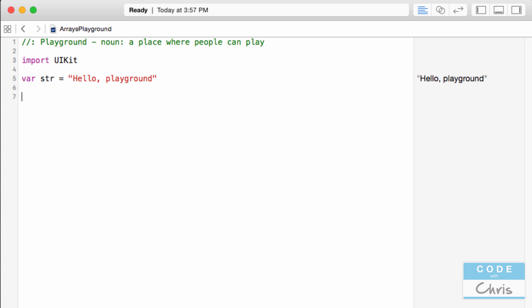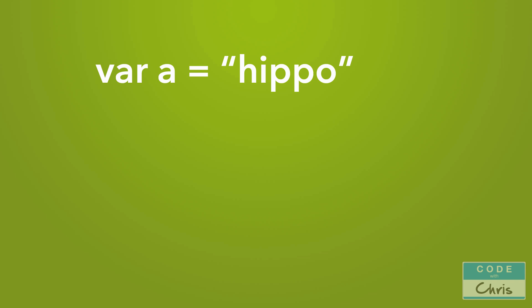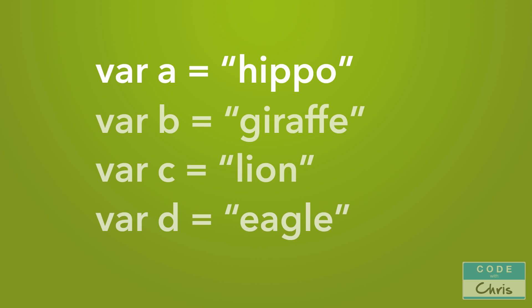In order to understand what it is, take a look at this. Let's say we have a variable 'a' and we're assigning into it a string. Now imagine if we had a couple of different strings — we would have to declare a variable for each one so that we can reference it.